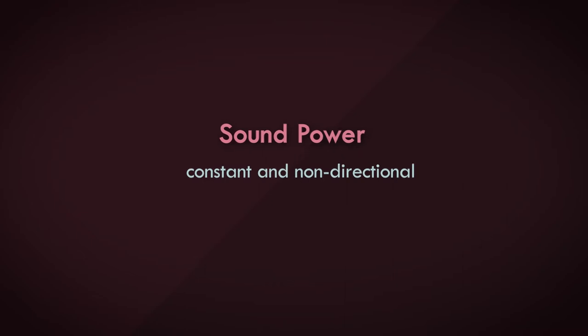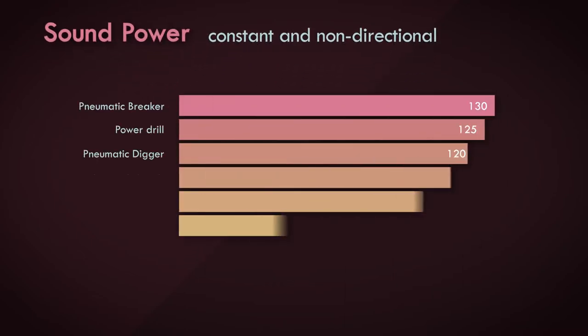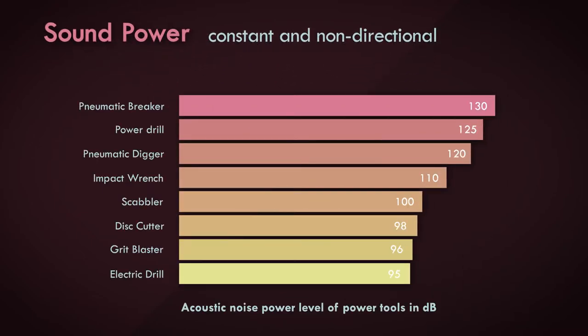This makes sound power levels ideal for product labeling, for comparing the sound emission of different power tools, for example. If an operator were to use a pneumatic drill, for instance, if he knows the sound power generated from this tool, he would know the appropriate level of ear protection to use and the maximum time that he can spend on the equipment in one go to meet health and safety guidelines and to prevent long-term hearing damage.